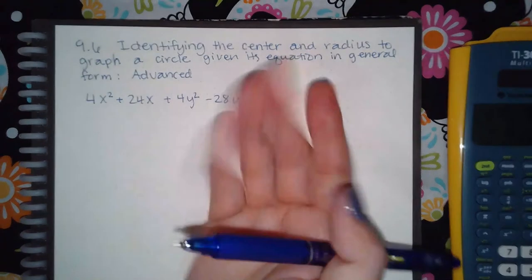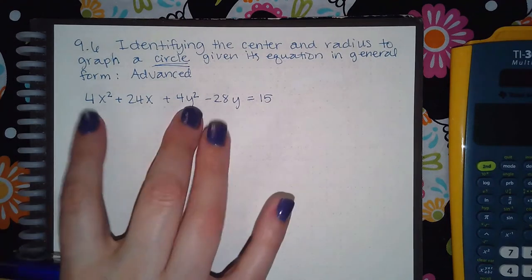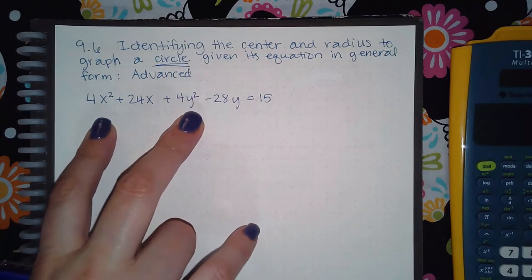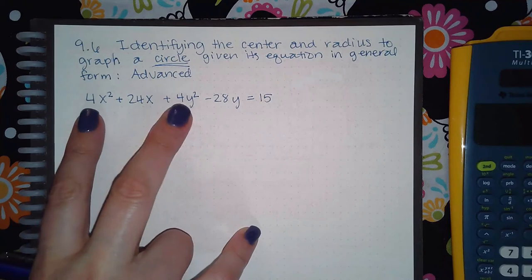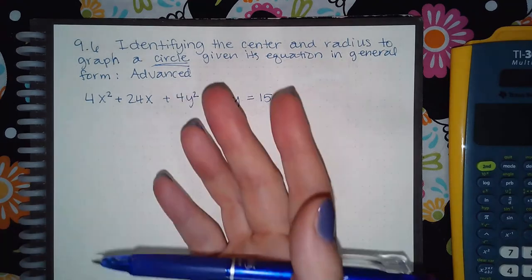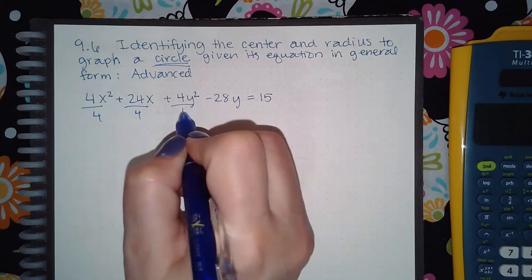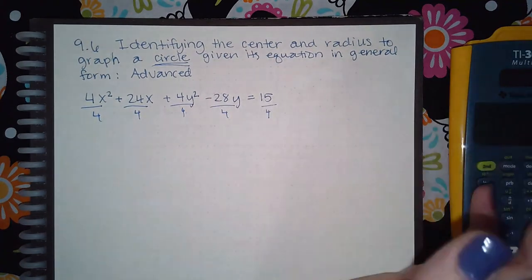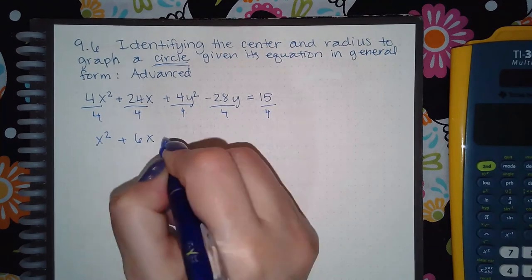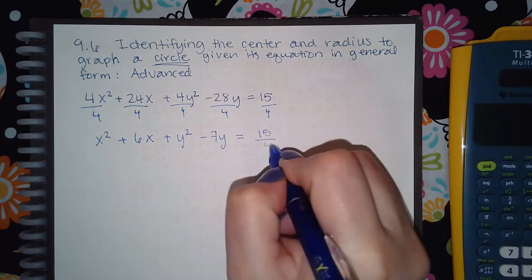So there should not be a number in front of x squared and y squared, and if there is, chances are because we are graphing a circle, it's going to be the same number. How do I get rid of that coefficient on both of those? You divide everybody by that coefficient. So I'm going to take every single term here and divide them by 4. What I get is x squared plus 6x plus y squared minus 7y equals—that does not reduce—15 over 4.